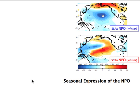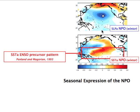Here is the NPGO and the SST NPGO footprint during winter, defined as January, February, March — this is the signature of the two. Previous work like Penland and Magorian have pointed out how this SST signature leads to ENSO.